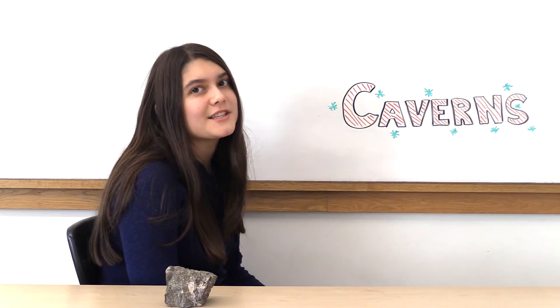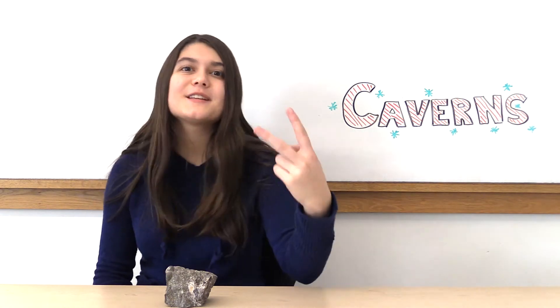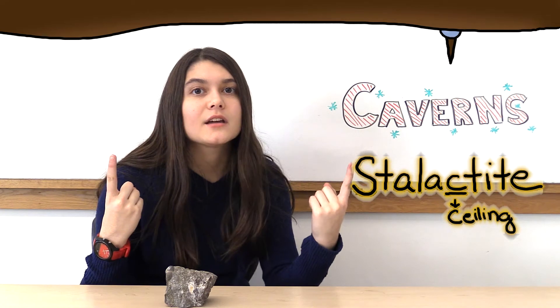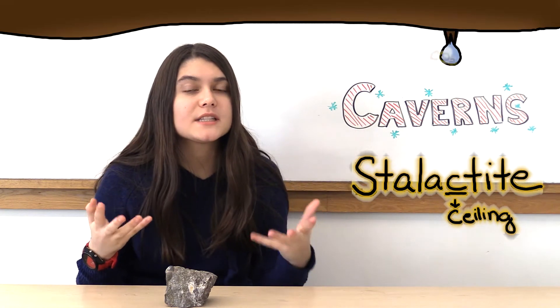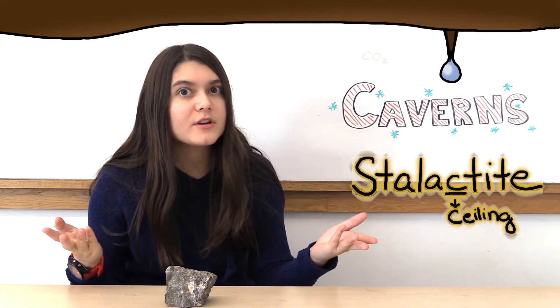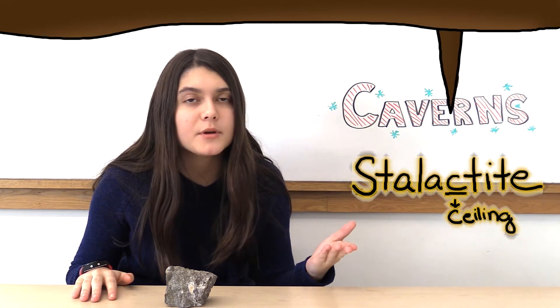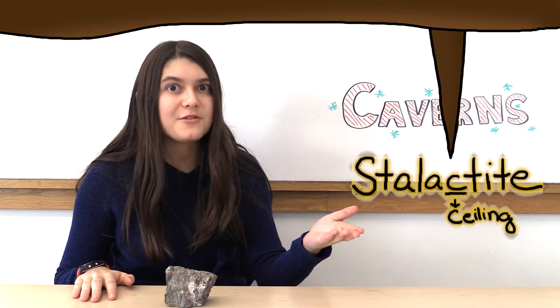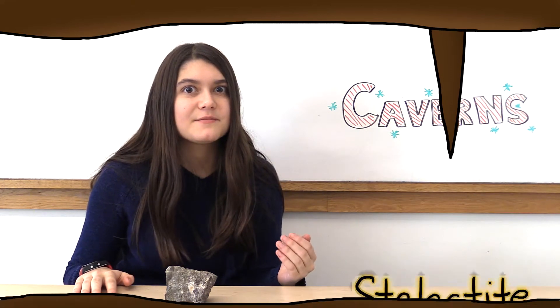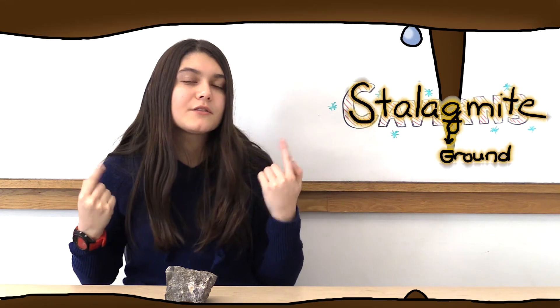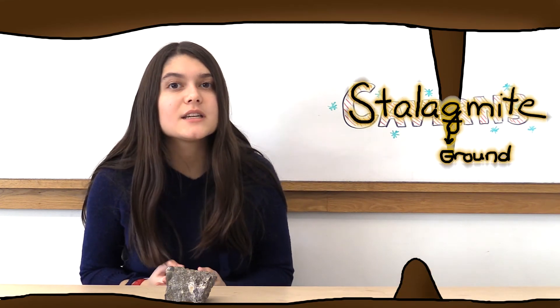There are two main kinds of dripstone: stalactites and stalagmites. Stalactites hang from the ceiling — a water droplet seeps through, and when it reaches the air, dissolved carbon dioxide escapes from the drop, then calcite separates out and is deposited. Stalagmites grow up from the ground. They're formed when a water supply drips from the ceiling and splatters on the floor.